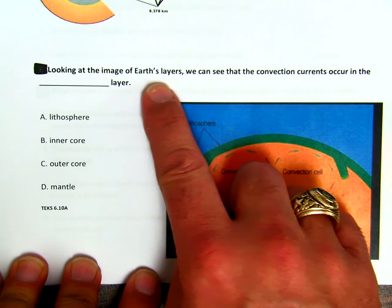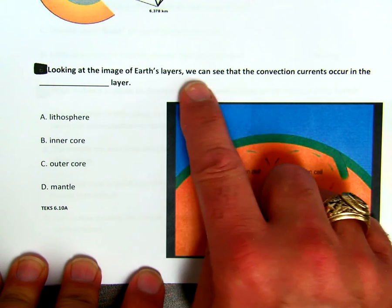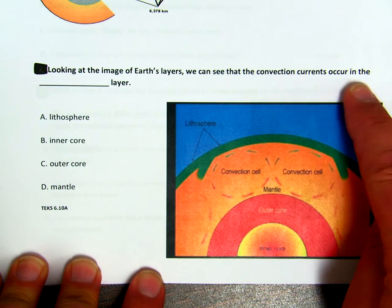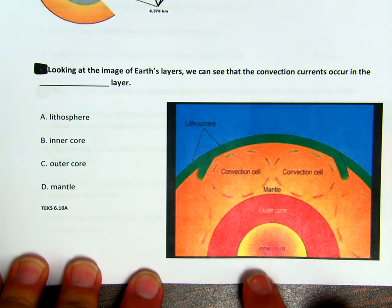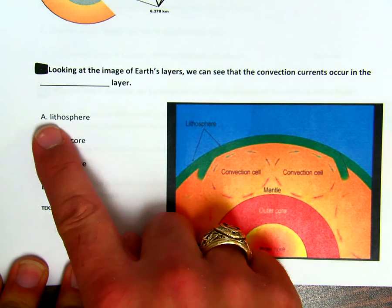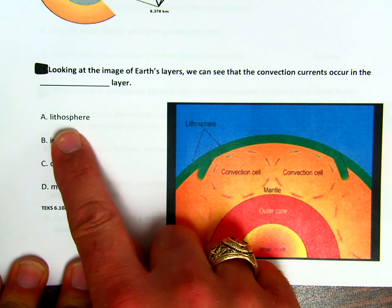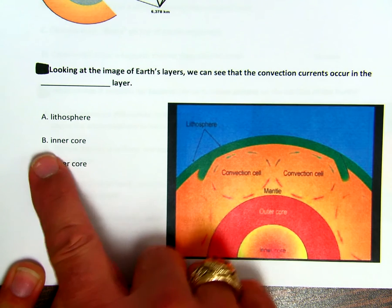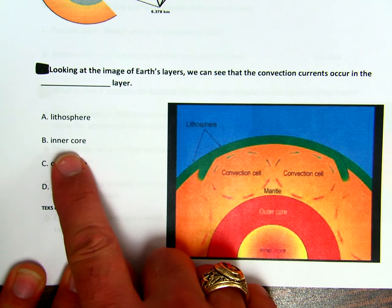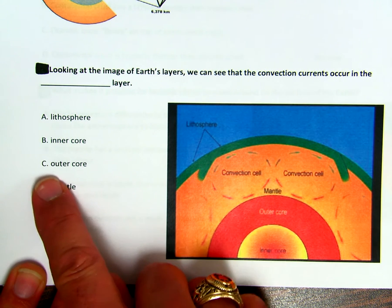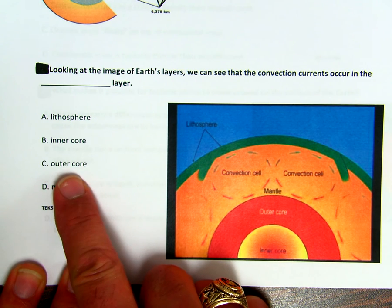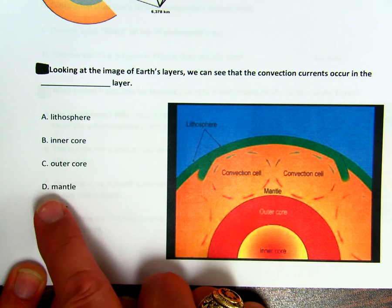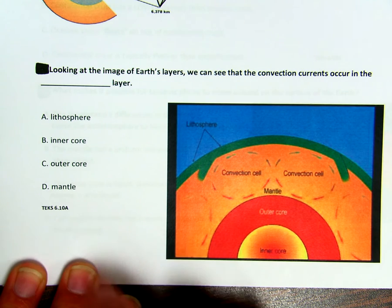Looking at the image of Earth's layers, we can see that the convection currents occur in the blank layer. Is it A, the lithosphere? B, the inner core? C, the outer core? Or D, the mantle?